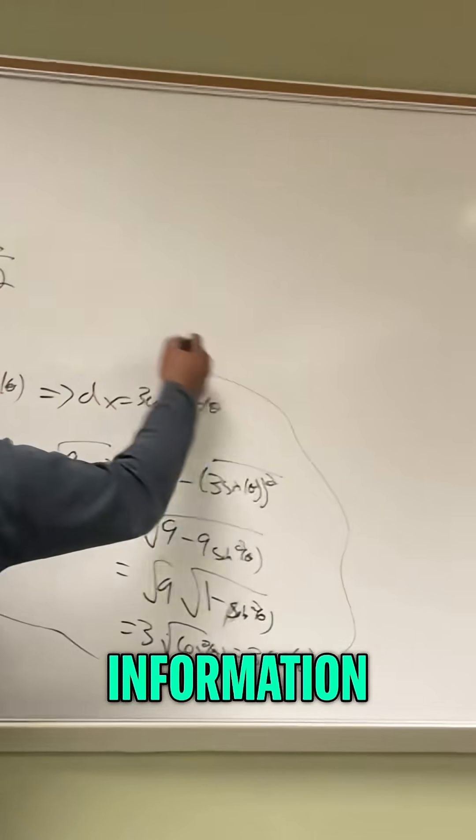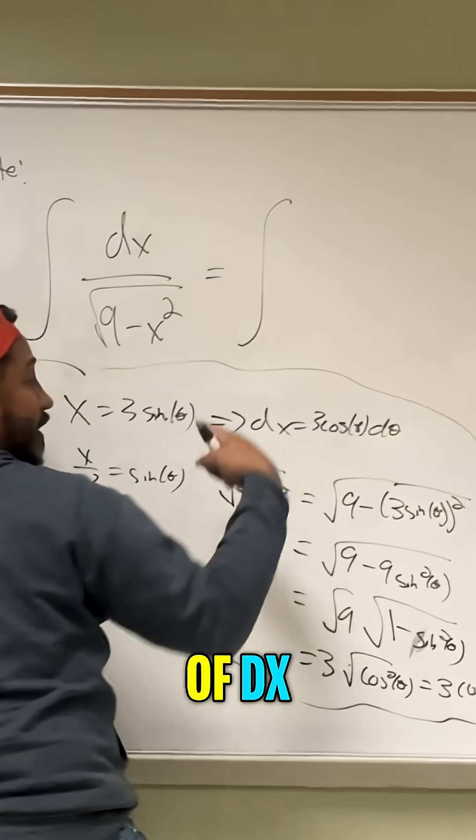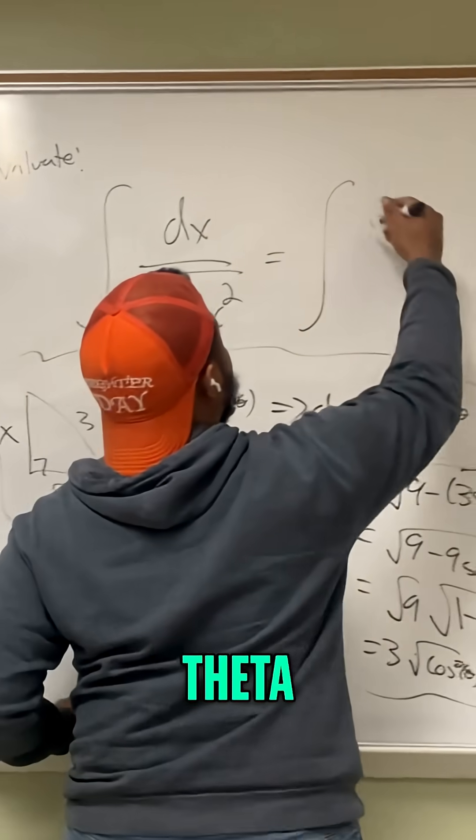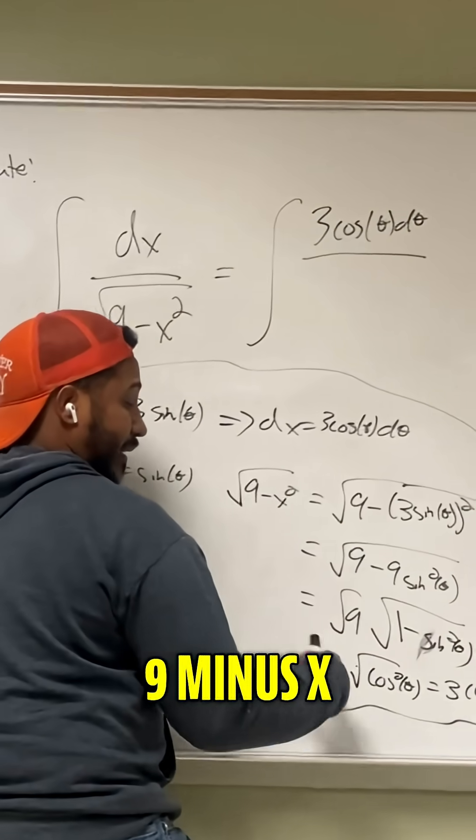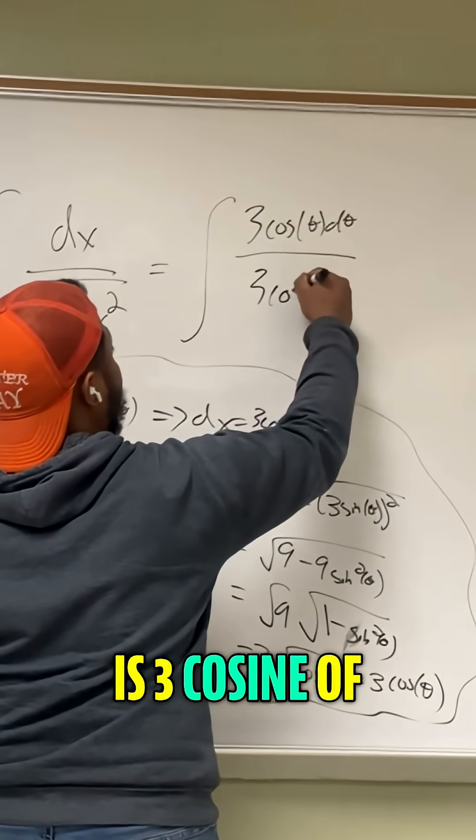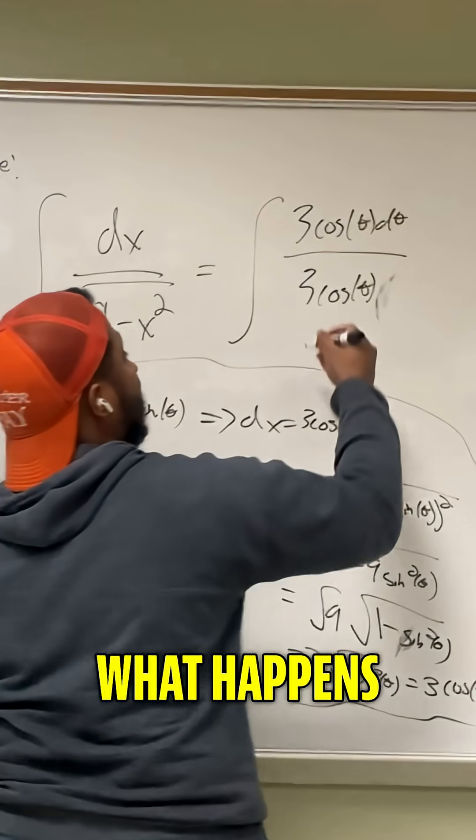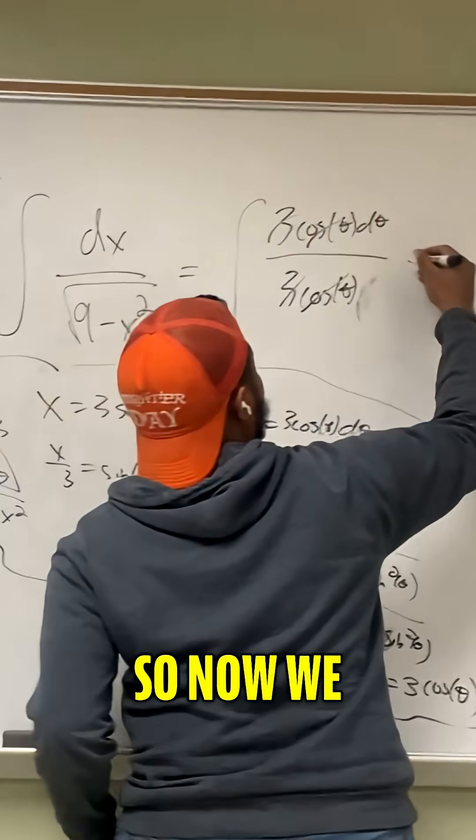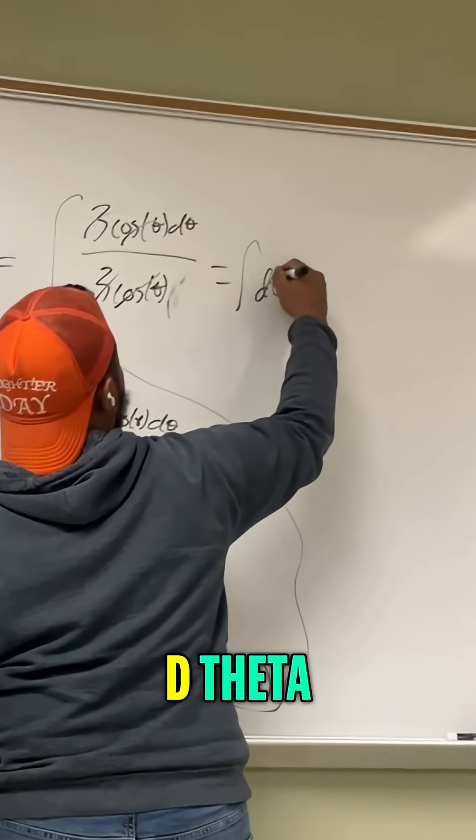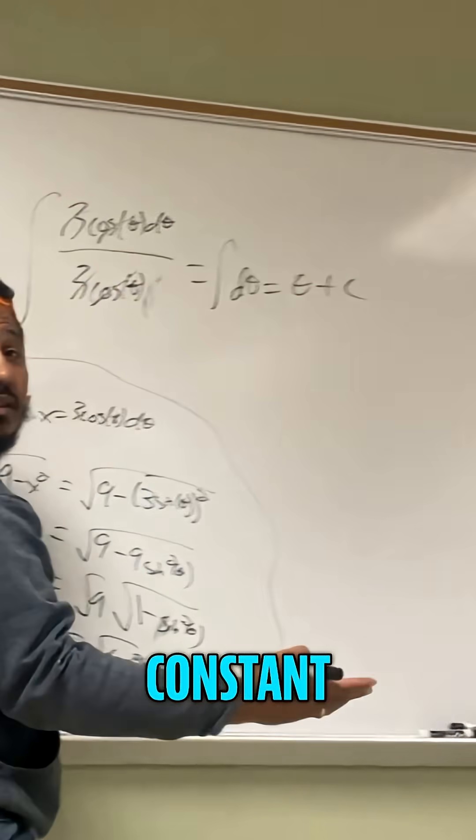Using all that information, this integral now becomes the integral of 3 cosine of theta d theta. Now we see the square root of 9 minus x squared is 3 cosine of theta. So notice what happens. These 3s cancel and these cosines cancel. So now we just get the integral of d theta, which is just theta plus some constant c.